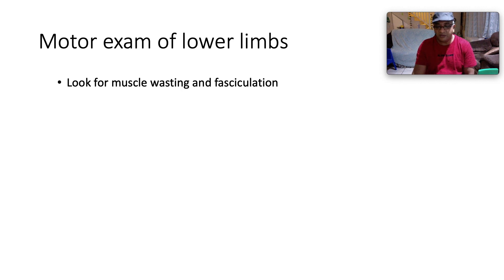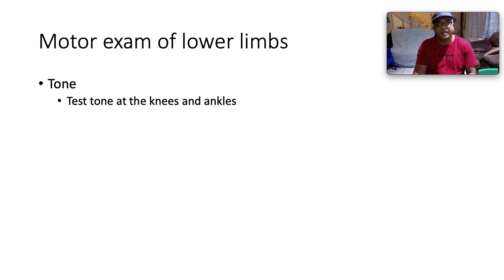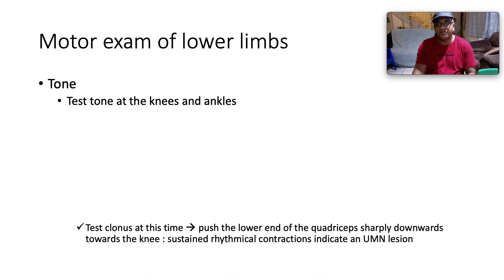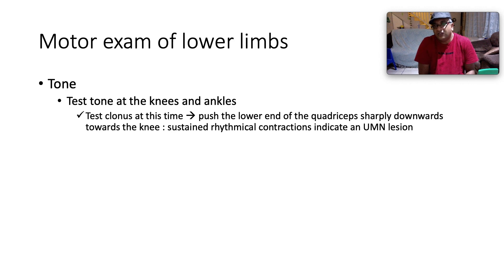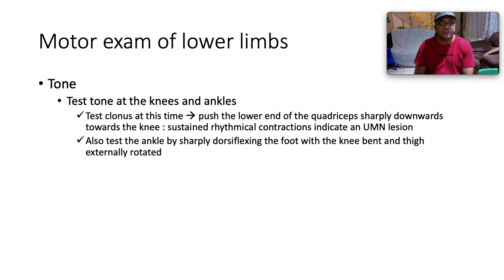For the lower limb motor exam, step back and inspect for muscle wasting and fasciculations — compare symmetrically and proximally to distally. Note any tremor and feel the muscle bulk of the quadriceps; run your hand up each shin feeling for wasting of the anterior tibial muscles. Test tone at the knees and ankles by moving joints at varying velocities. If tone is increased, test for clonus: push the lower end of the quadriceps sharply toward the knee and note sustained rhythmical contractions indicating an upper motor neuron lesion. Test ankle clonus by sharply dorsiflexing the foot with the knee bent and thigh externally rotated.